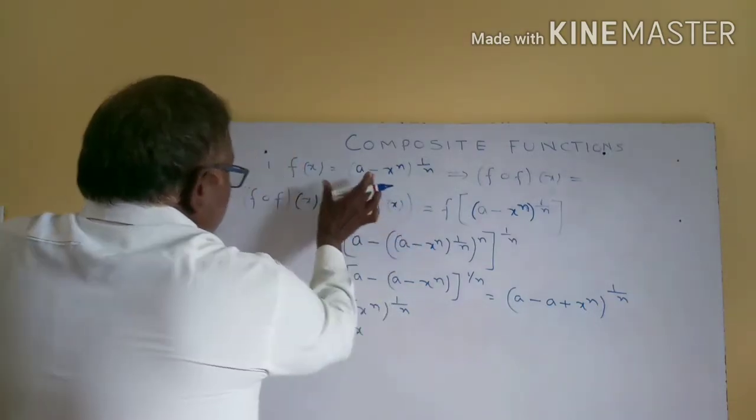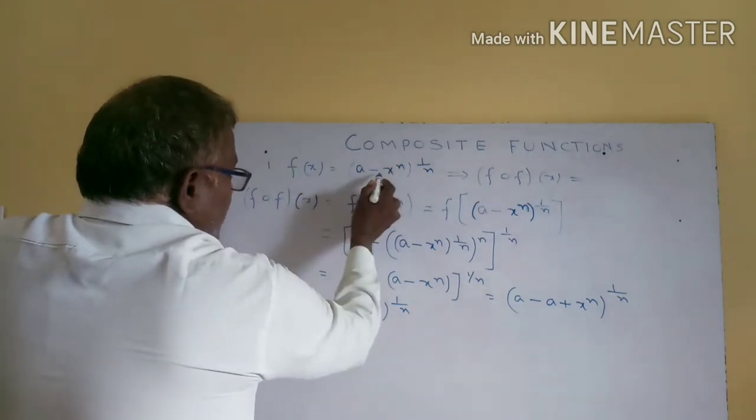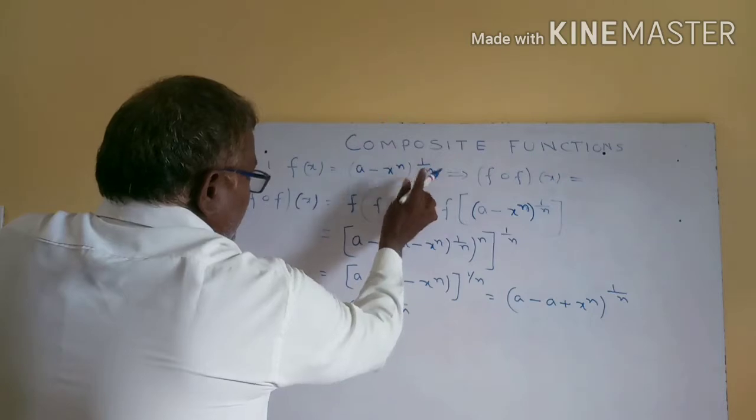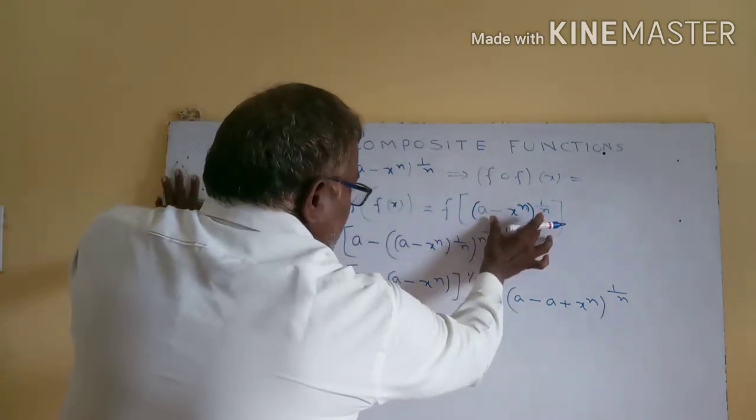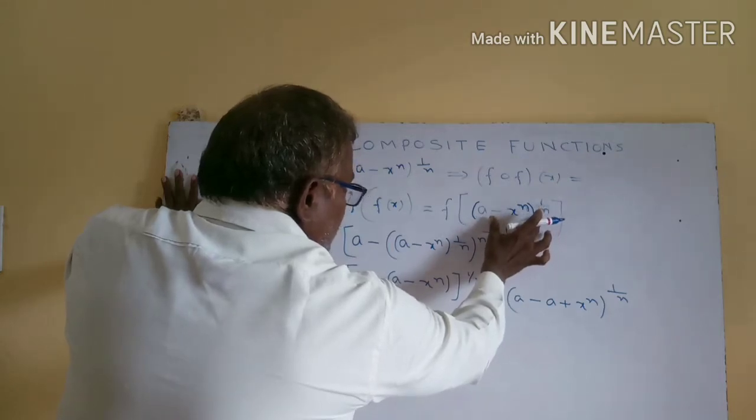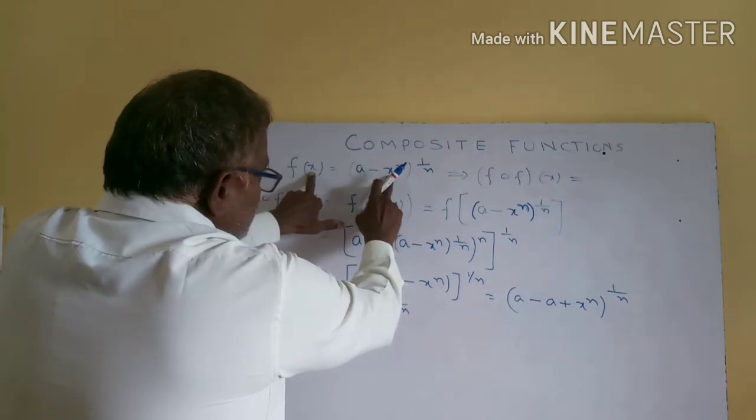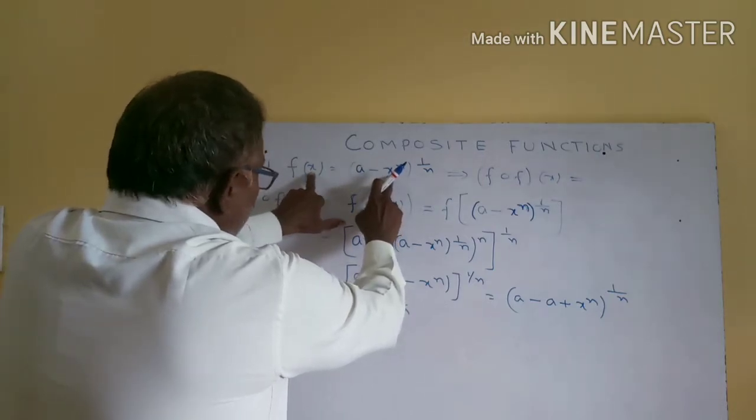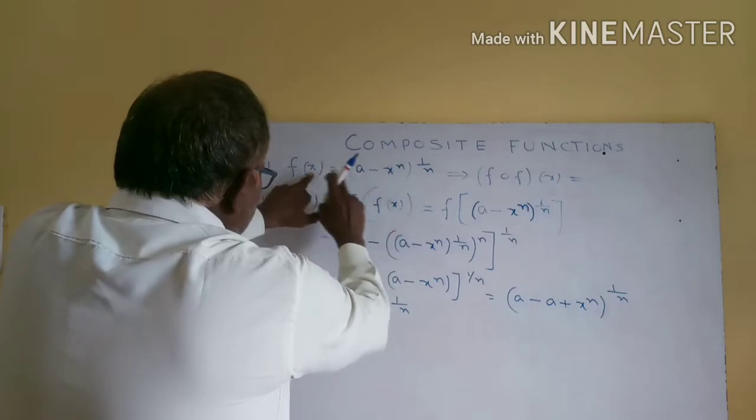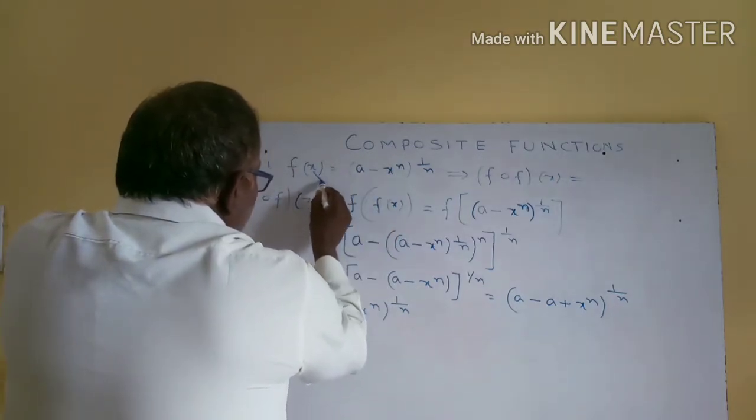Here f circle f(x), just you can write f of f(x), simple. This circle plays through bracket. So f of f(x). If f(x) value, what is given? This is the given function: (a minus x power m) whole power 1 by m. Just you have to write down here.